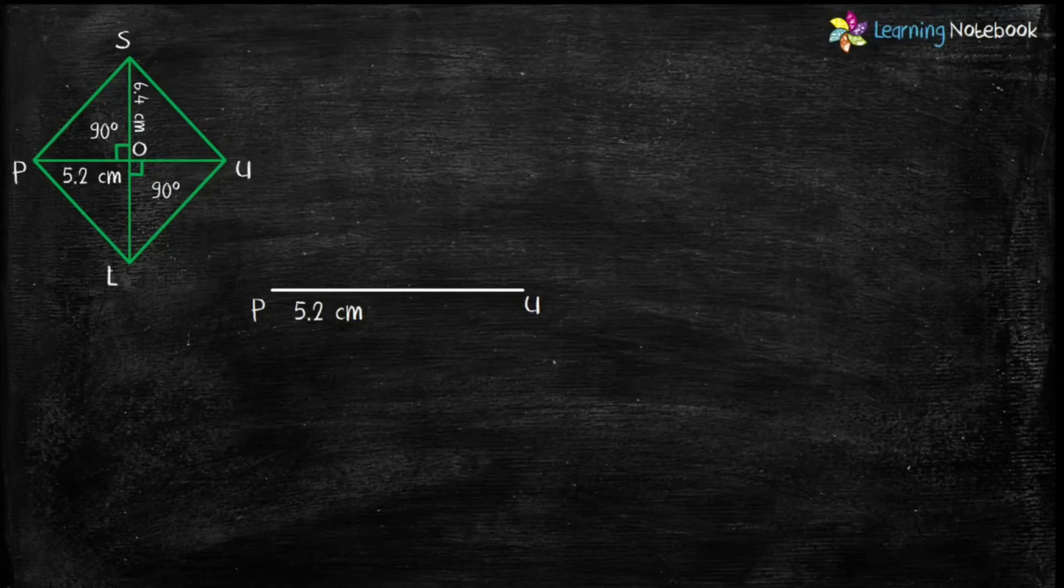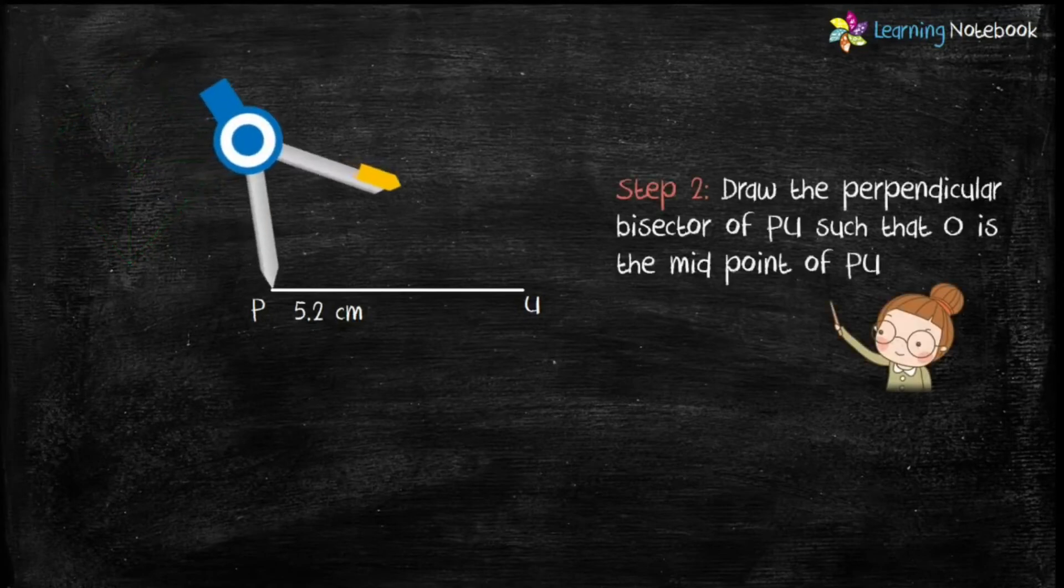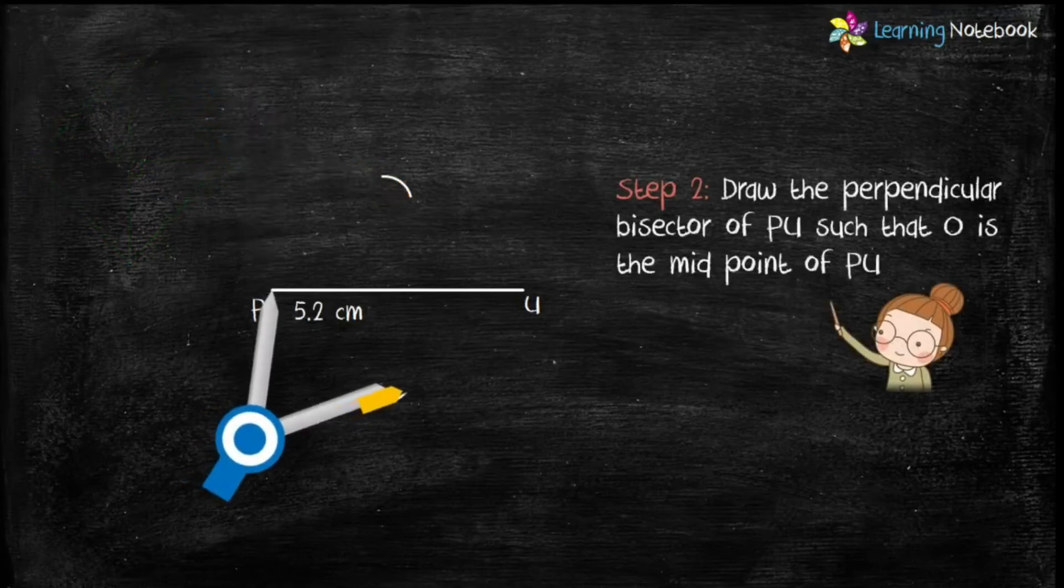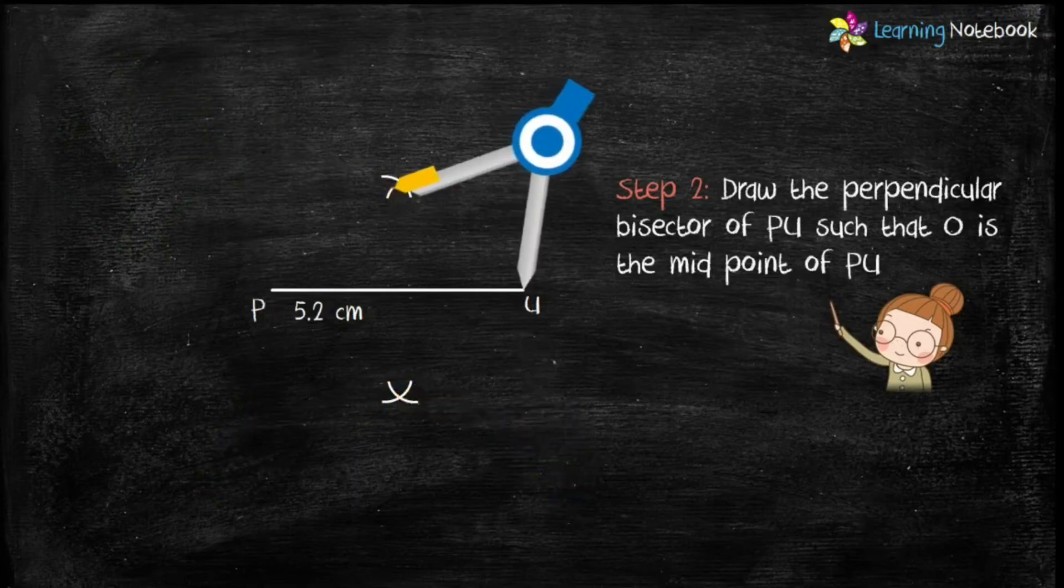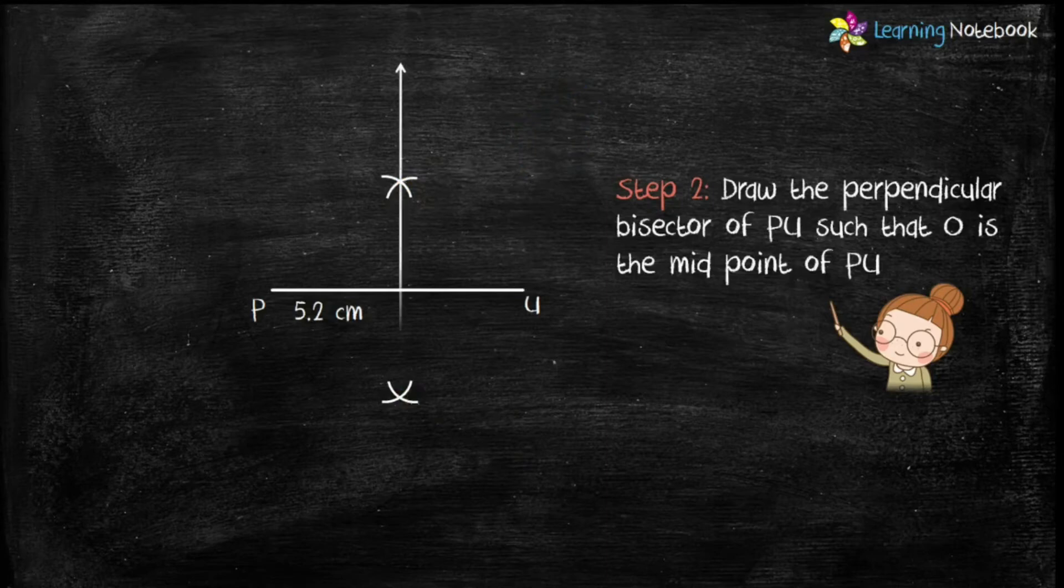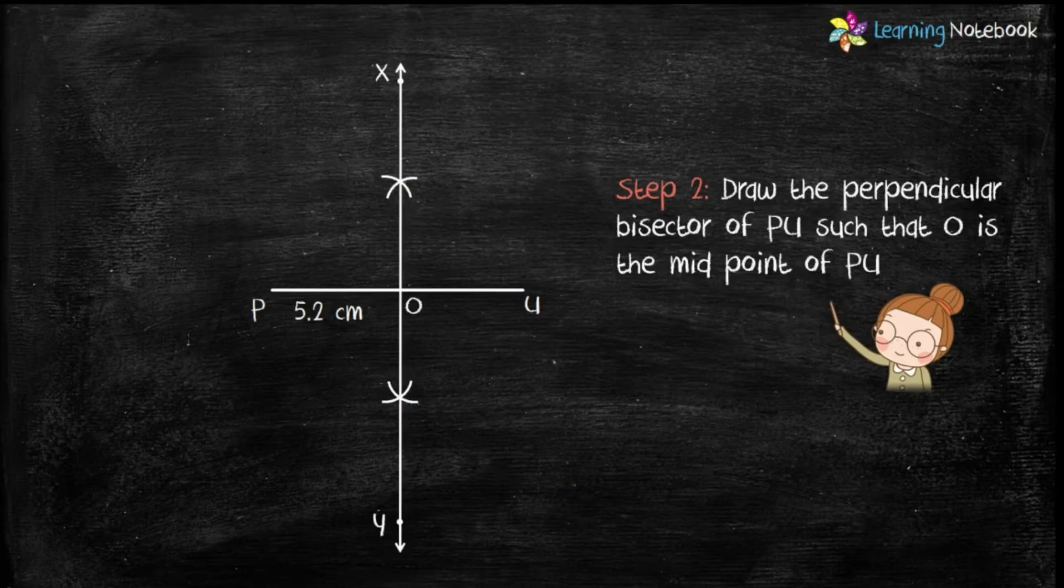Now students, in step 2, let's draw the perpendicular bisector of PU such that O is the midpoint of PU. Students, you may watch my separate video to learn step-by-step construction of a perpendicular bisector.